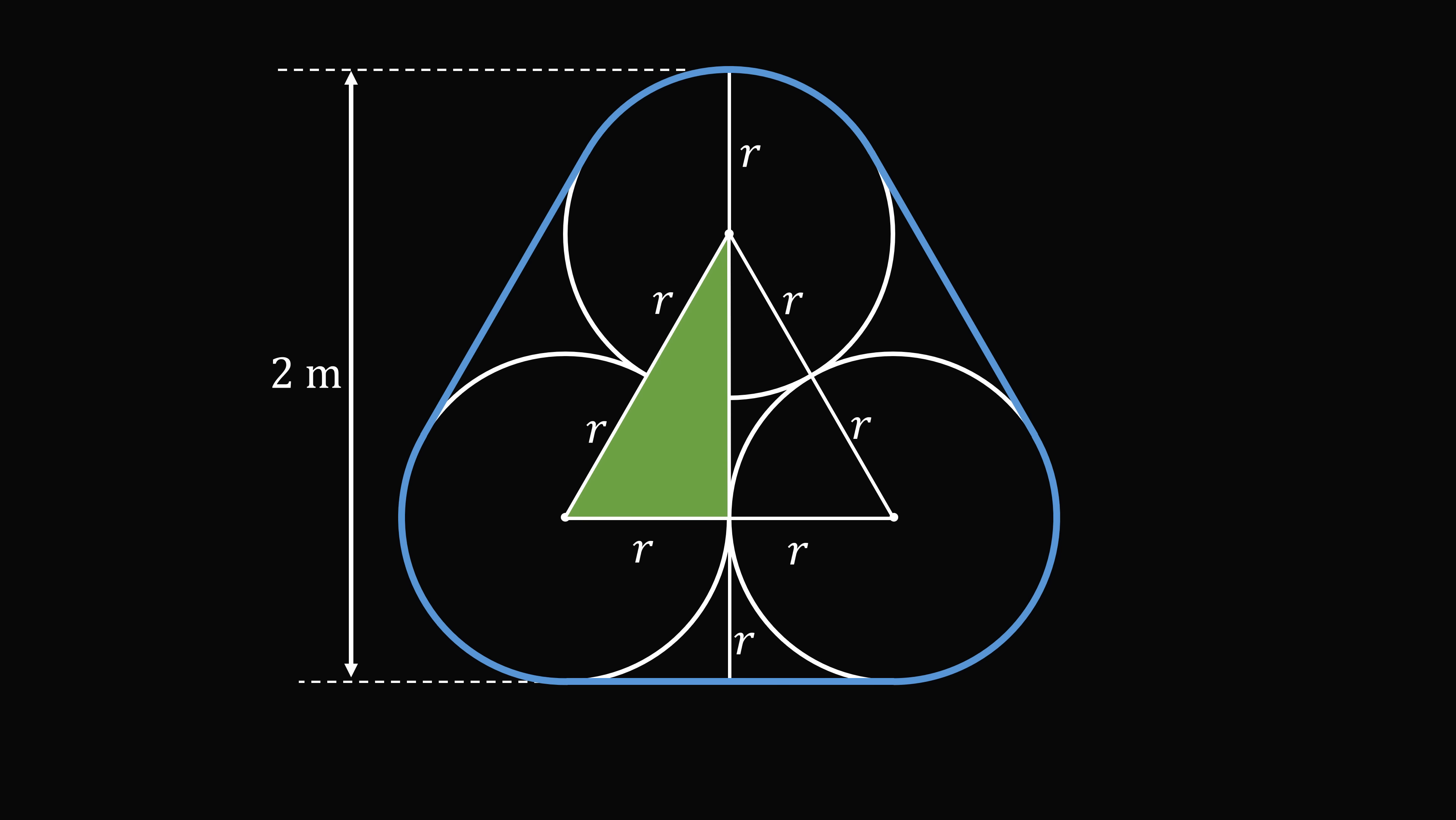Now here we have half of an equilateral triangle. So one angle will be 60 degrees, the other angle will be 30 degrees, and we have a special 30-60-90 right triangle. So the length of the longer leg will be equal to r root 3. So we've now calculated the distance from the top to the bottom will be equal to r plus r root 3 plus r, and we were given this is equal to 2 meters.